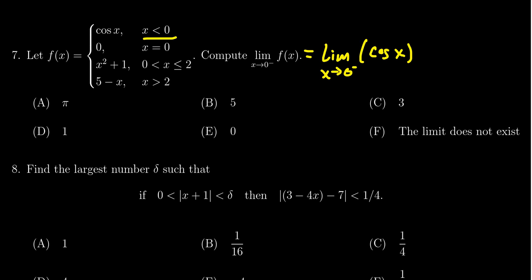Now cosine is a continuous function, so to evaluate the limit, we can just evaluate the function. So we get cosine of 0, which as we know from trigonometry, cosine of 0 is equal to 1, and therefore the correct answer here is D.